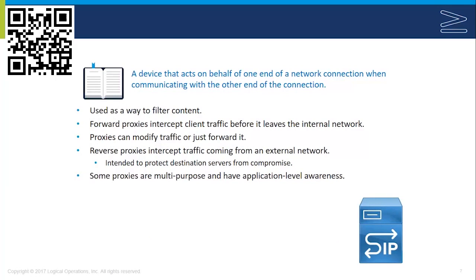Proxies can also act in reverse. A reverse proxy intercepts traffic coming from an external network and is intended to protect internal servers from compromise. The reverse proxy intercepts traffic, examines it, and then forwards it to the web server, so the web server is not directly accessible from the internet. Some proxies are multipurpose and have application-level awareness of traffic passing through them, allowing them to make decisions based on the nature of traffic, like translating IPv4 into IPv6 or determining where to forward traffic based on a particular URL rather than just a port number.